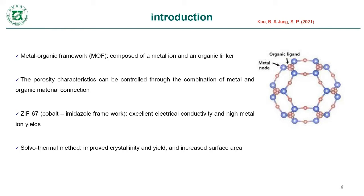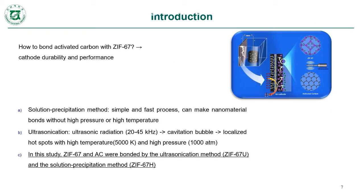The porosity characteristics can be controlled through the combination of metal and organic material linkers. In this study, we synthesized our material using the solvothermal method. The solvothermal method improved the crystallinity structure, its metallic ion yield, and increased the surface area. After synthesizing this material, we needed to determine how to bond it with activated carbon to achieve high performance and high durability. We use two methods.